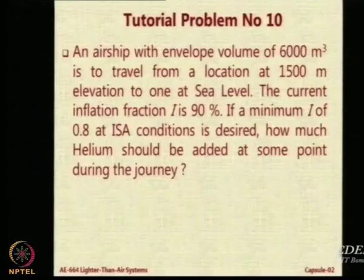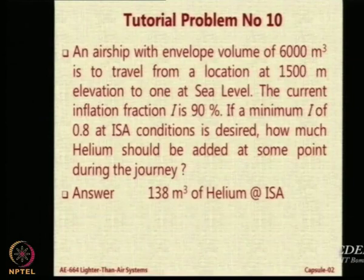The current inflation is 0.9, that is i1. So i2 will be 0.9 multiplied by 0.8637, which equals 0.777. The minimum desirable value is 0.8, so there is a shortfall of 0.8 minus 0.777, which is 0.023. That shortfall multiplied by the volume of the envelope gives the helium to be filled: 138 cubic meters of helium at ISA sea level.